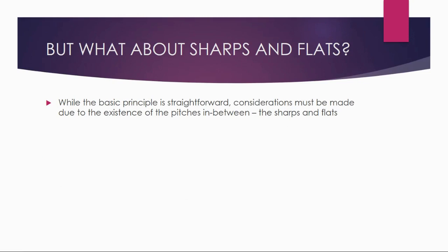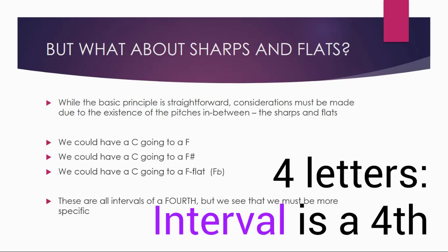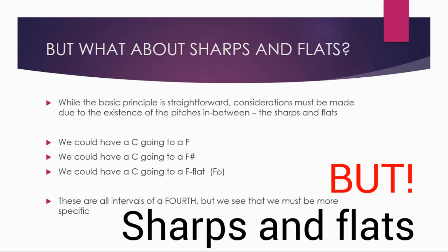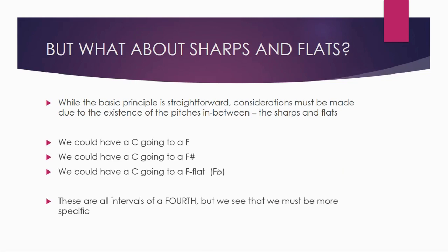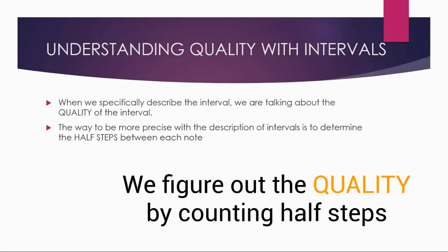But we're actually a little bit smarter than that because we know there are notes in between those natural notes — there are sharps and flats, and we have to take that into consideration. We could have a C going to an F, a C going to an F sharp, or a C going to an F flat. C, D, E, F — that's all going to be some sort of fourth. But we see F, F sharp, F flat, so we have to be more specific. We call this identifying the quality of the interval — describing it all the way down to its half steps.